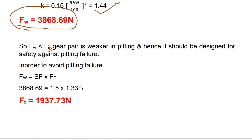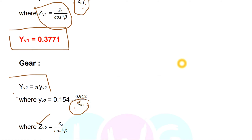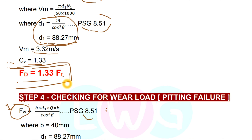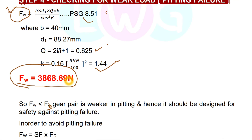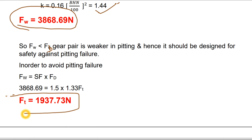To find the tangential force, use Fw = SF × Fd. So 3868.69 = 1.5 × 1.33 × Ft. Solving for Ft gives Ft = 1937.73 N.